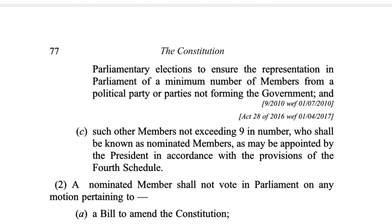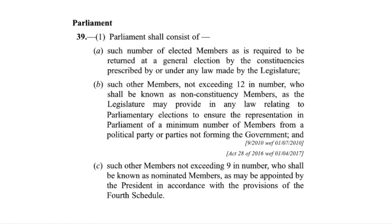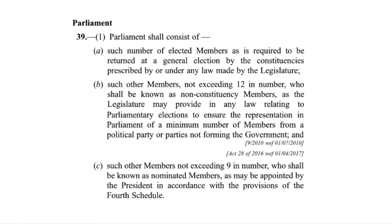But there's one surprising feature of Article 39. Subsection 1 of the article lists not one, but three types of members of parliament. Subsection 1A accounts for the members elected by the people through general elections. But how about subsections 1B and 1C? That's where it gets interesting.